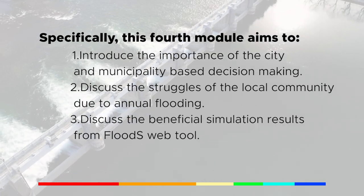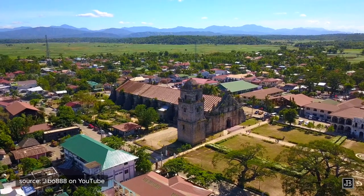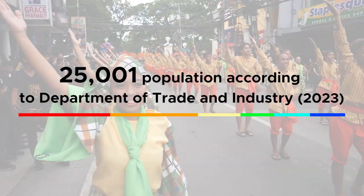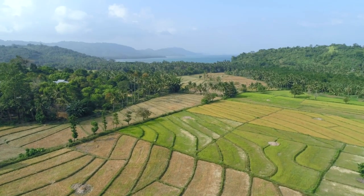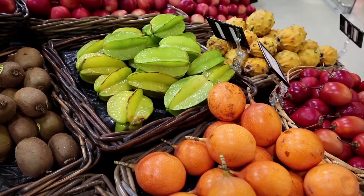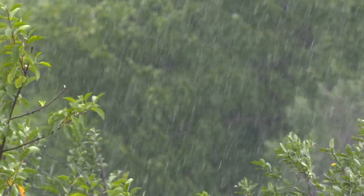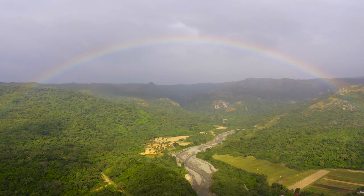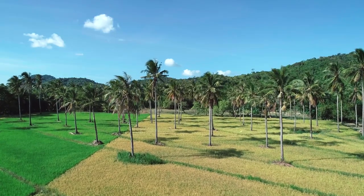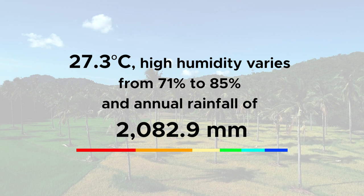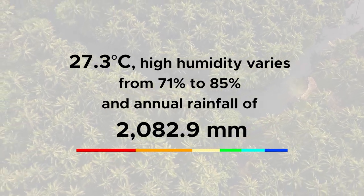The Municipality of Paua'i in the Ilocos Region is in the province of Ilocos Norte in the northern Philippines, home to a population of over 25,000, according to the Department of Trade and Industry. Known for its rich agricultural land, Paua'i produces rice, tobacco, garlic, sugarcane, and various fruits and vegetables due to its favorable weather conditions — dry season from December to May, while the rainy season covers the rest of the year, with peak rainfall observed from July to September. The municipality is characterized by a tropical and maritime climate with a relatively high temperature of 27.3 degrees Celsius.